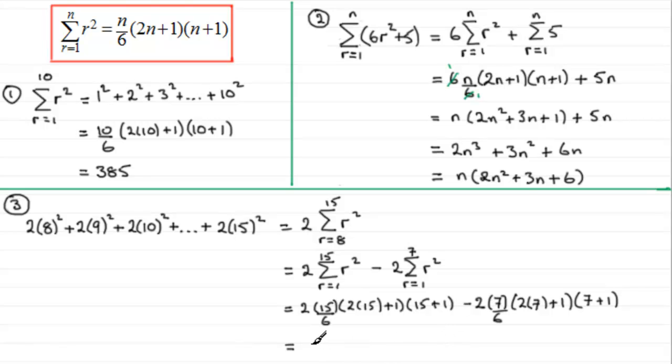Now I leave that to you to work out, but if you do, say type that into your calculator, what you should find you get is 2200. So hope that's given you some idea then on how we can work with the sum of r squared for these kind of examples. Now my next video, what I'm going to do is introduce you to the formula for the sum of r cubed and with that we'll do some similar kinds of examples.